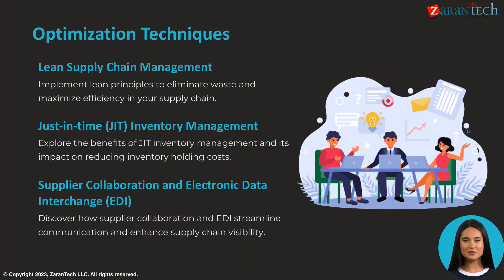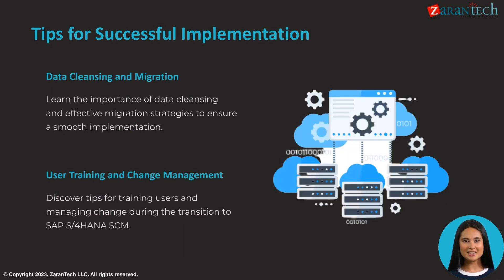SAP S/4HANA allows implementation of proven optimization techniques. Lean principles eliminate supply chain waste through techniques like kanban and heijunka leveling. Just-in-time inventory management slashes holding costs by precise coordination of stock levels and production. Supplier collaboration and EDI streamline communication for greater efficiency and visibility.